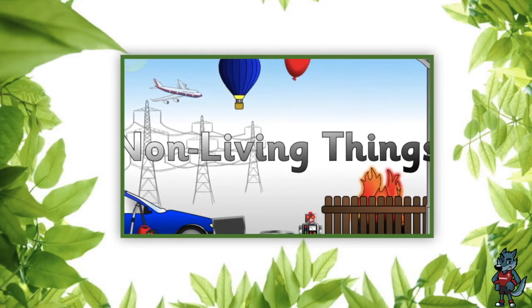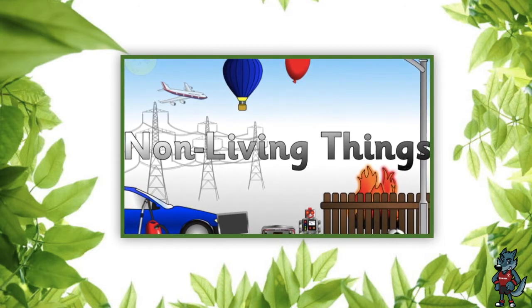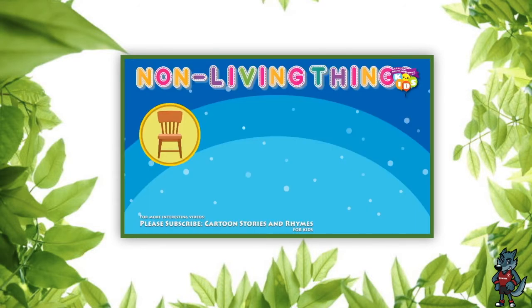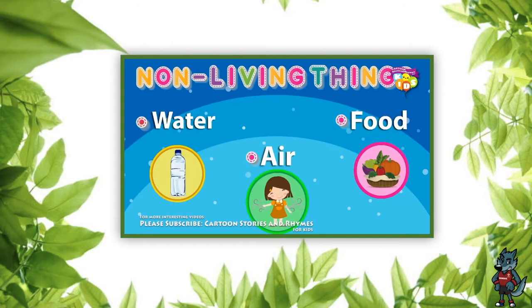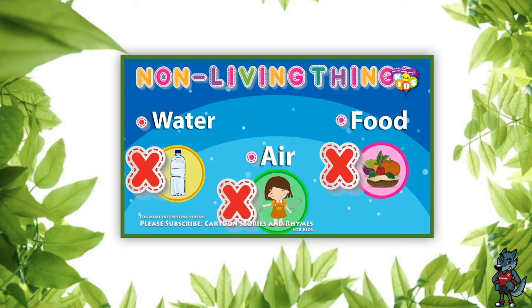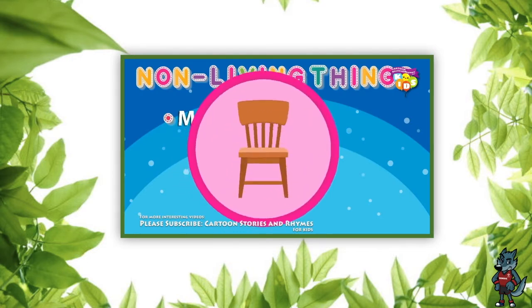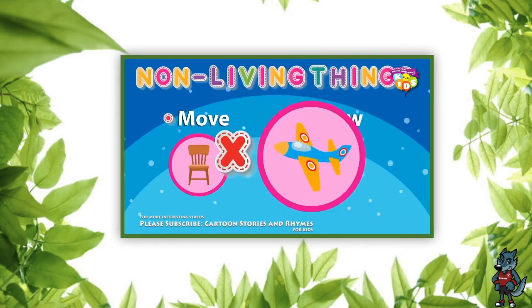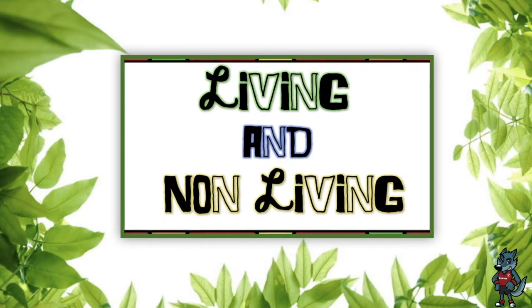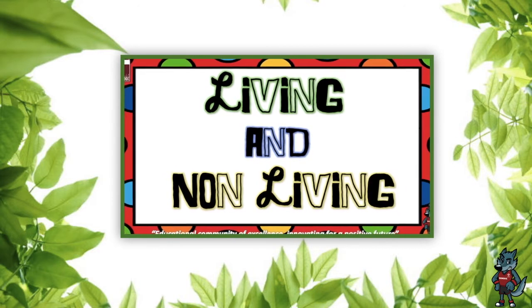Non-living things are a chair, a bottle, a rock, and a toy — and a lot of different things around us. Non-living things don't need water, they don't need food, and they don't need air. They don't move and they don't grow.